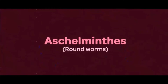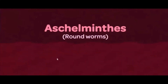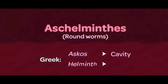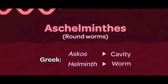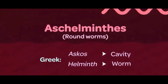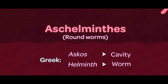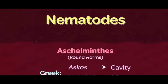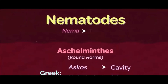Aschelminthes, also known as roundworms, is derived from two Greek terms: 'askos,' meaning cavity, and 'helminth,' meaning worm — so worms having a cavity containing a cylindrical body. The name nematode also indicates a thin and cylindrical-like body, where 'nema' stands for thread.